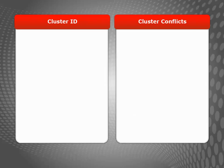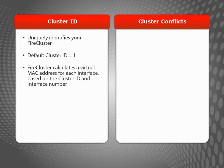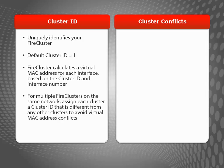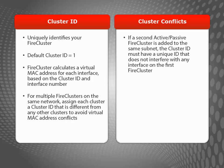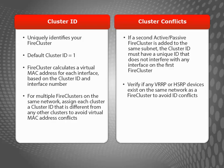When you configure a FireCluster, you need to assign a cluster ID number to identify it. The default ID number is 1. While the cluster ID may seem trivial, there are times when it can become very important. For example, if you use certain third-party routers in your network that rely on VRRP to get their network IDs, it is possible that the ID they receive can conflict with your FireCluster ID. I recommend reviewing the FireCluster help for more information.